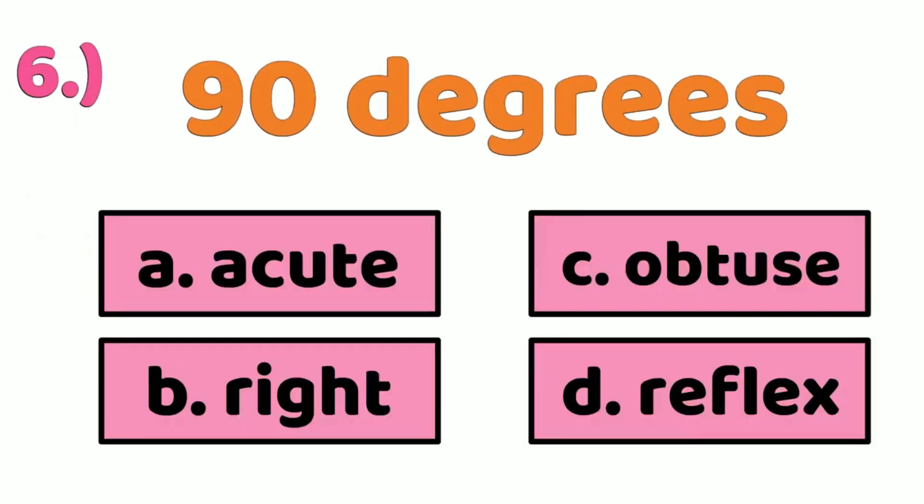Letter A. Number 6, 90 degrees. It is right angle. It is letter D, right angle.